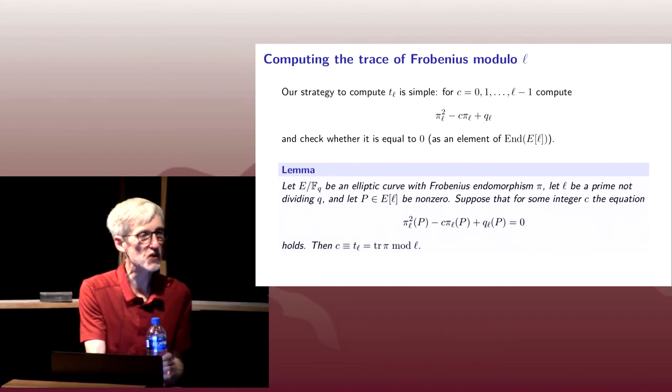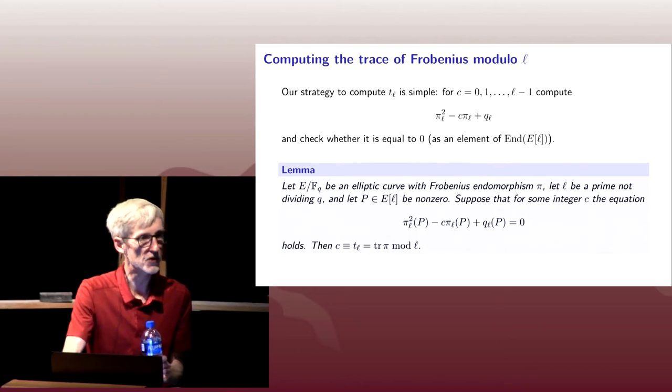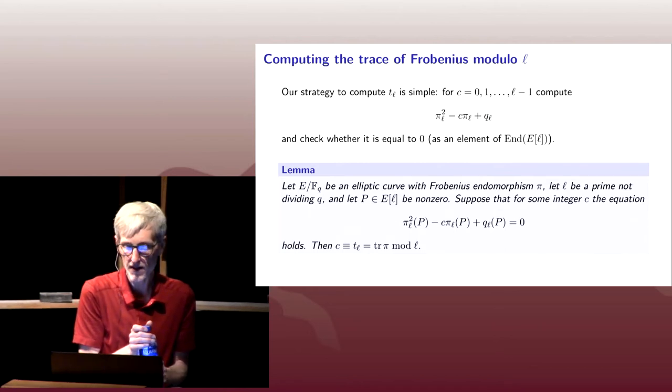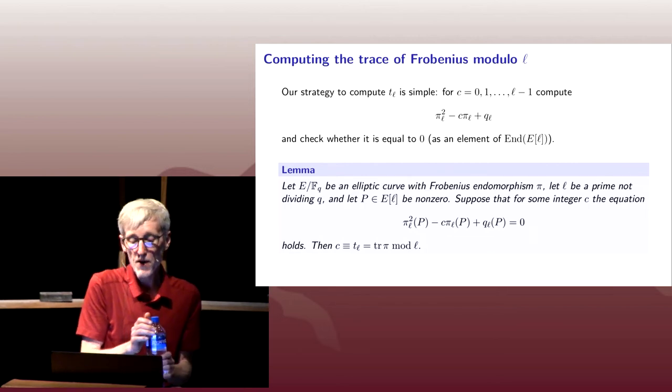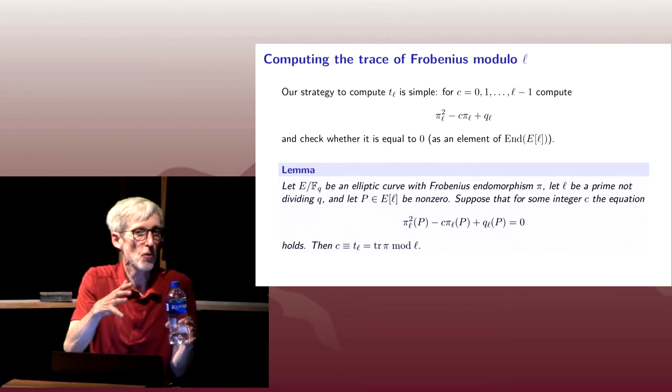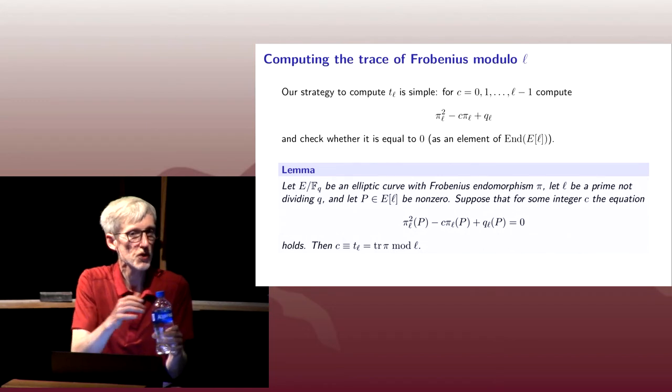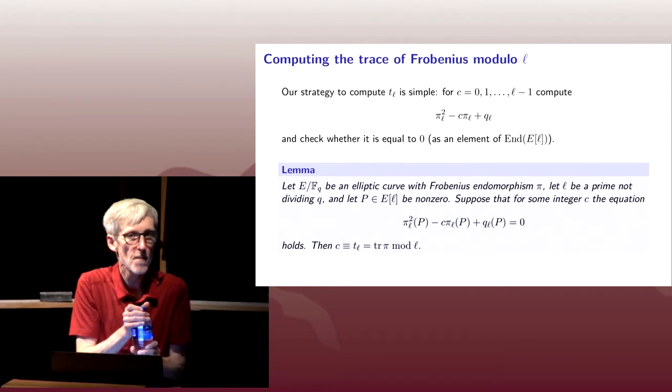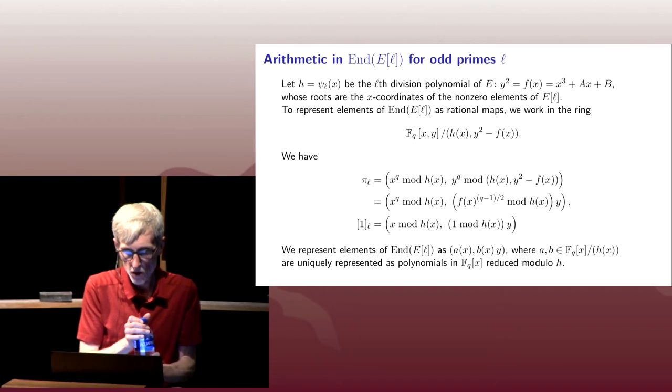And the answer is yes, it's guaranteed to work. One can prove that if you have a c that works, it has to be congruent to the trace of Frobenius mod l. I won't walk through the steps of that proof, but I'll put a link in the notes. Moreover, this is true even if you're working in a sub-ring of the endomorphism ring of the l-torsion, which we will sometimes have the opportunity to do.